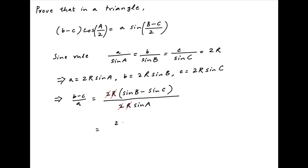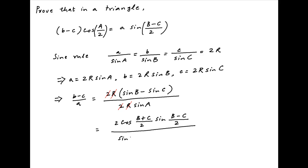The numerator can be written as 2 cos((B + C)/2) · sin((B - C)/2), and in the denominator, A can be replaced with π - (B + C), because the sum of the angles of the triangle is π.